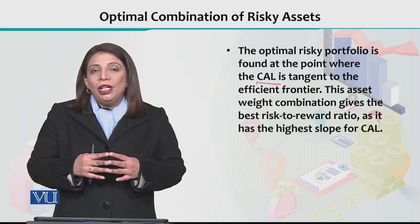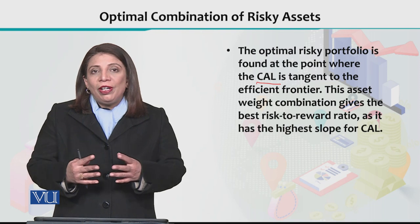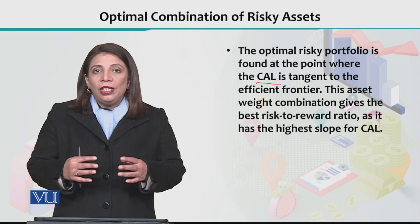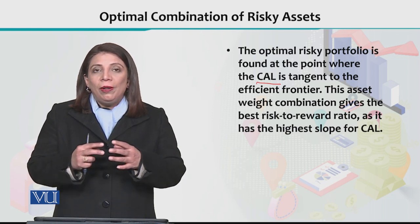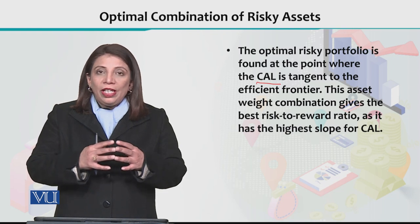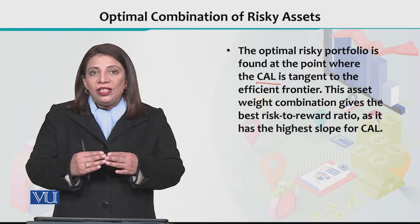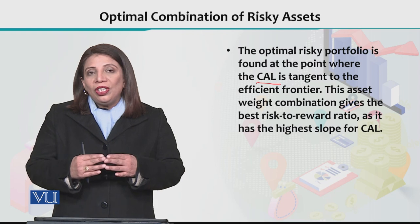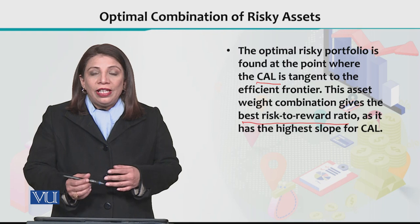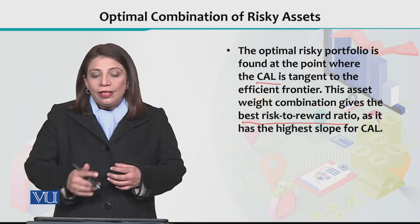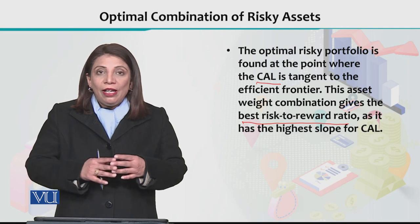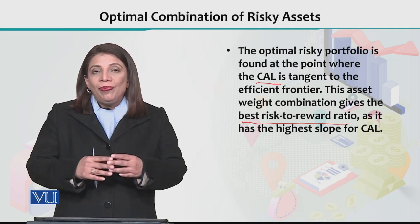We are assuming that we will be developing a portfolio which contains two risky assets and one risk-free asset, and our portfolio is based on these three assets. If we look at this point of tangency of the capital allocation line and the efficiency frontier, it will give us the best risk-to-reward ratio, and that will be considered as the optimal combination of the risky assets.